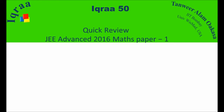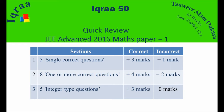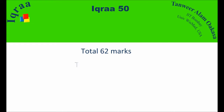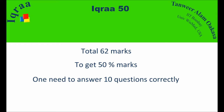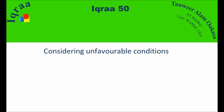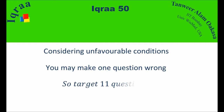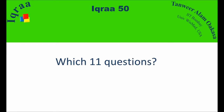Let's have a quick review of Maths Paper 1, 2016. The first two sections have negative marking, but the last section — the integer type section — has no negative marking. The paper is of 62 marks, and to get 50%, we need to answer 10 questions out of 18. Considering unfavorable conditions, target 11 questions to be safe. The most important question is: which 11 questions?